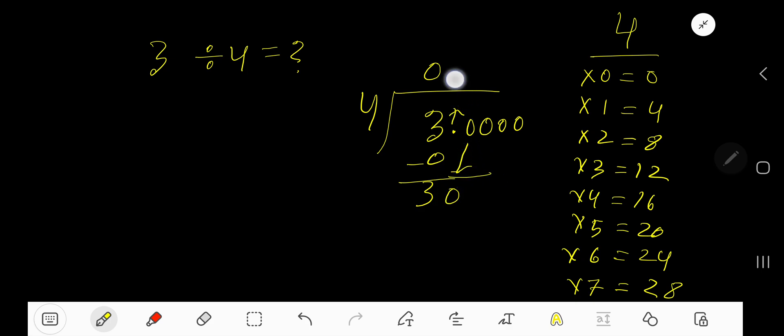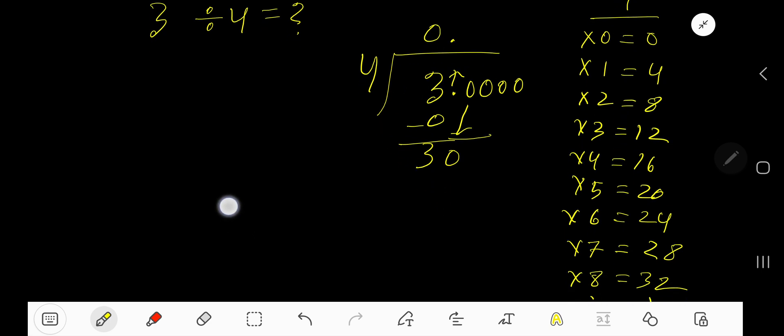4 goes into 30 how many times? 8 times 4 is 32, which is too much, so 7 times. 7 times 4 is 28. Subtract to get 2. Bring down the next zero to get 20.